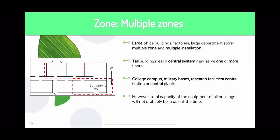Multiple zone large office buildings, factories, large departmental stores, multiple zone and multiple installation tall buildings — each central system may serve one or more floors. College and university campuses, military bases, supermarkets, research facilities, central stations, and bus stations will all have multiple zones, meaning two rooms may share one zone and the next few rooms will have their own zones.